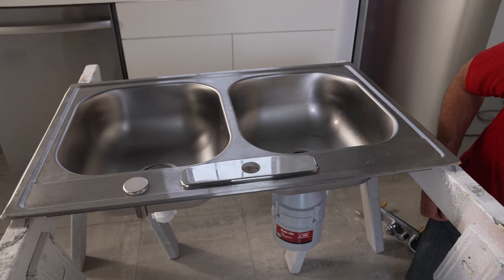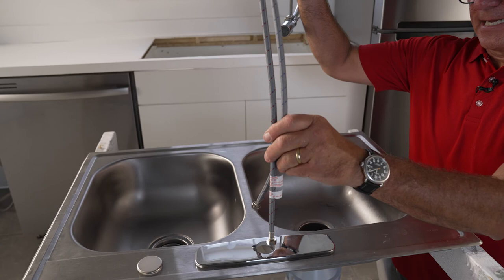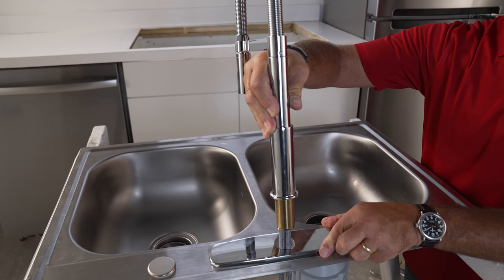Now with that escutcheon in place, this is a single faucet. I'm going to feed the water tubes through that hole, and then the entire body of the faucet is going to fit in there over the top.